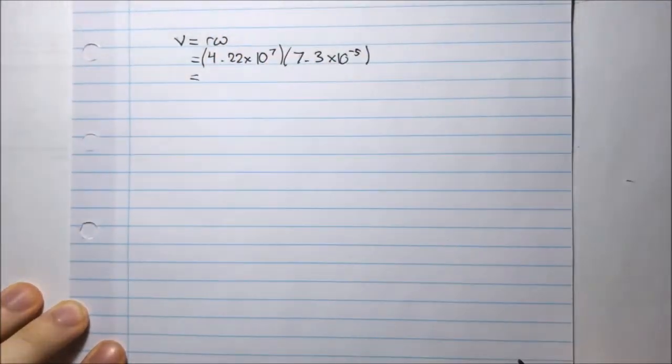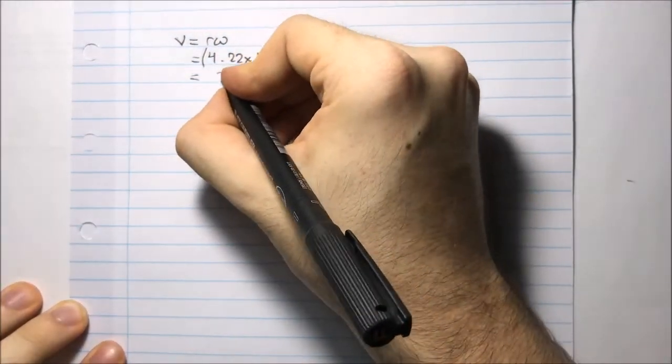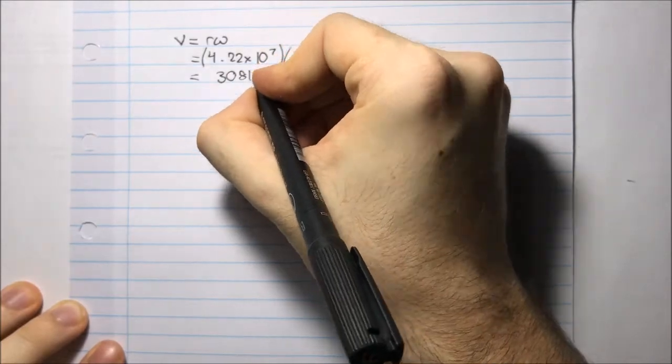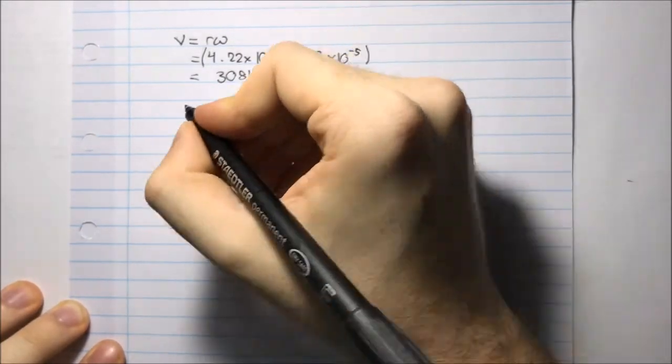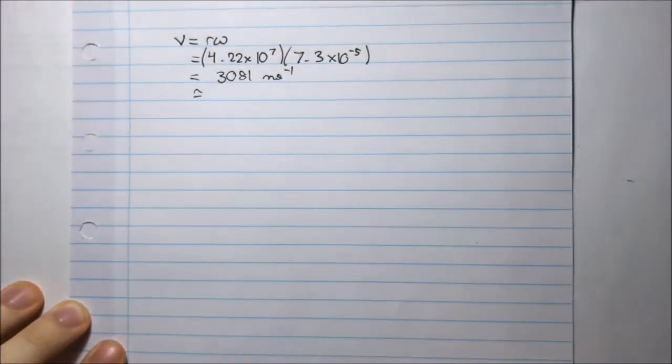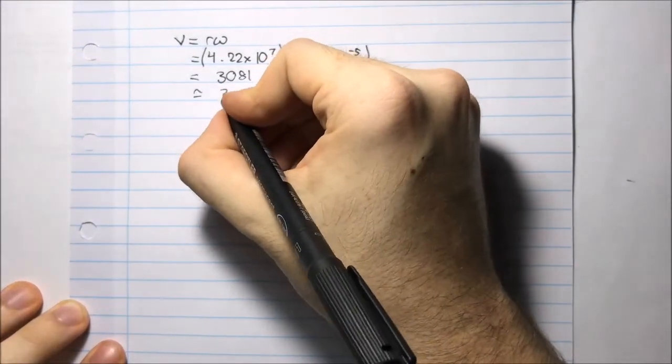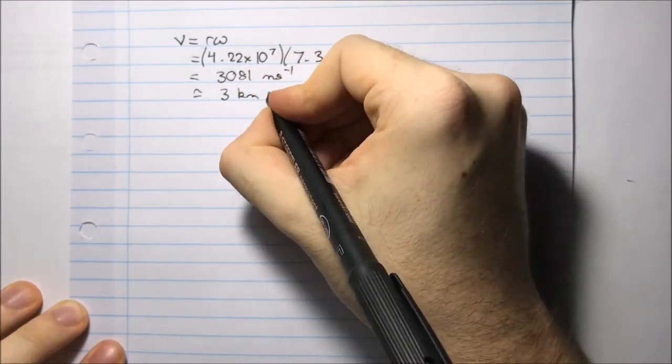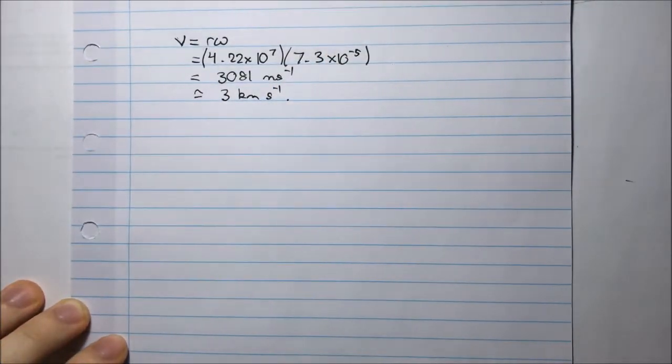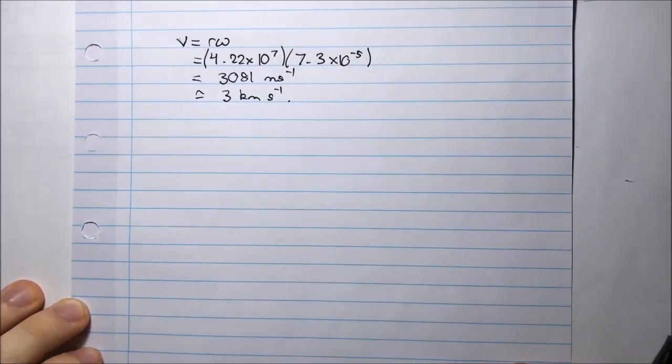If I punch that into my calculator, I'll get about 3081 meters per second, which is also approximately equal to 3 kilometers per second. That's really fast. That's the speed required, the linear speed, to keep a satellite orbiting around the Earth with a period of one day for one complete revolution.